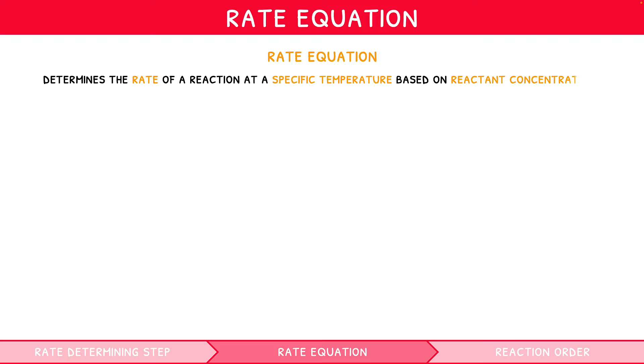So what is a rate equation, and how does this relate? Well, a rate equation is a formula used to determine the rate of a reaction at a specific temperature, based on the concentrations of the reactants within. It is written as rate equals k times reactant 1 times reactant 2, and so on, where k stands for the rate constant.